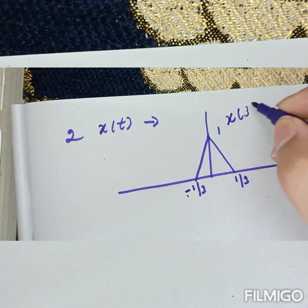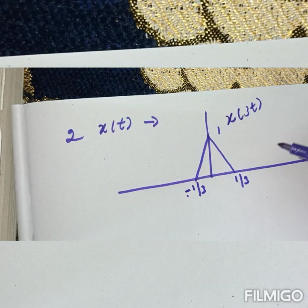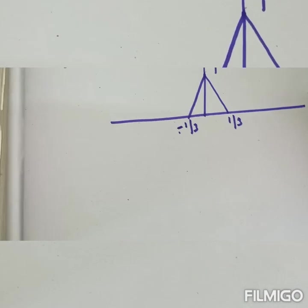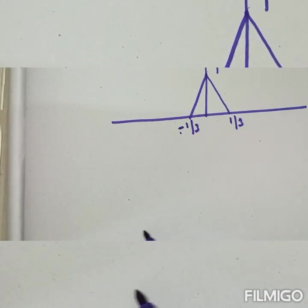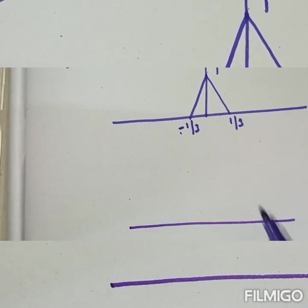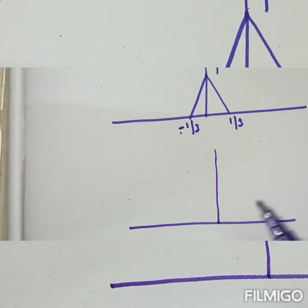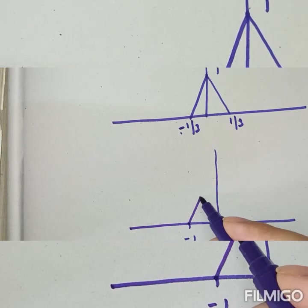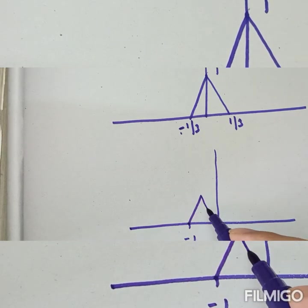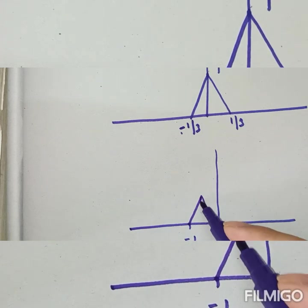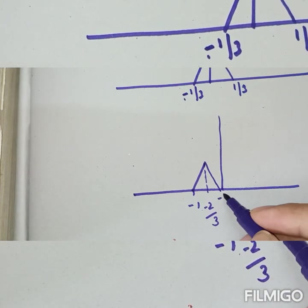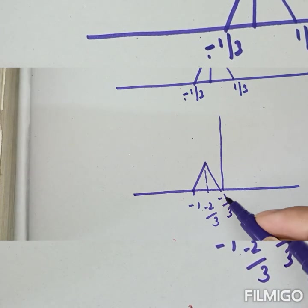This is my x of 3t obtained from the original signal. Let me draw the x of 3t signal: it starts from minus 1/3 and ends at plus 1/3, passing through the midpoint. The values are: minus 2 by 3, which is approximately 0.666, and minus 1 by 3, which is approximately 0.333.